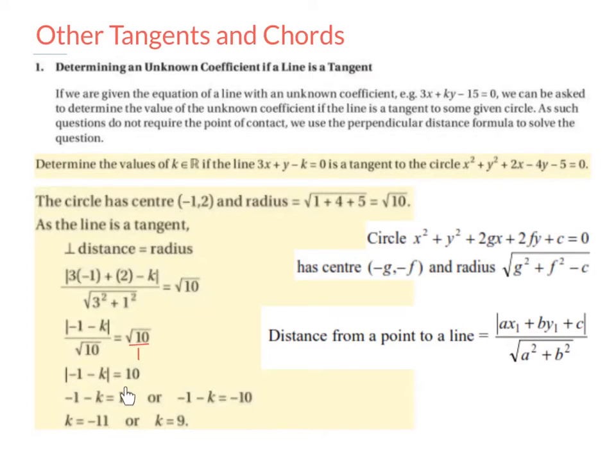So minus 1 minus k is 10, so k is minus 11. Or minus 1 minus k is minus 10, so k equals 9. So we're asked to find the values of k and they are minus 11 and 9.